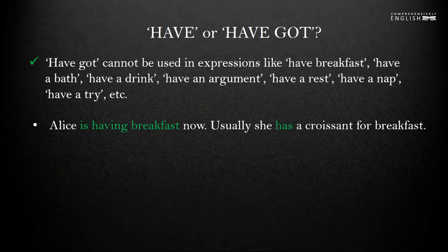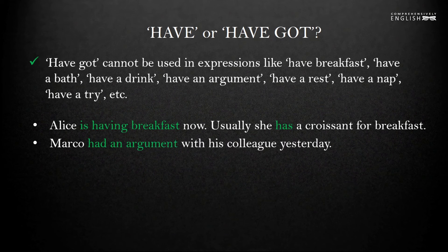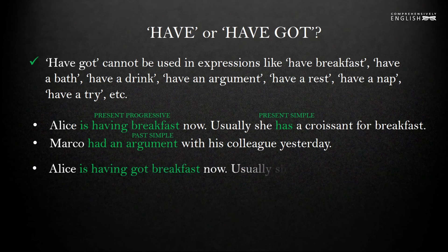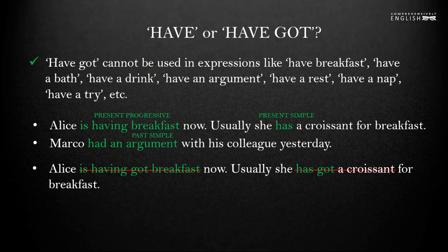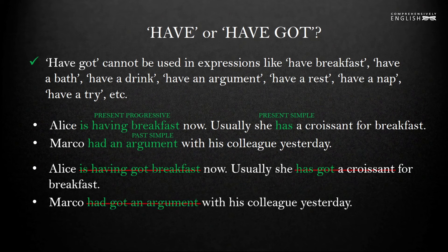'Alice is having breakfast now' — have is used in the present progressive tense, meaning Alice is eating her breakfast now. 'Usually she has a croissant for breakfast' — present simple tense. 'Marco had an argument with his colleague yesterday' — past simple tense. Neither of these sentences can use have got. We cannot say 'Alice is having got breakfast now' or 'usually she has got a croissant for breakfast.' Have something for breakfast means to eat it, not to possess it. Have got also cannot be used in the past simple tense — remember, have got exists only in the present.